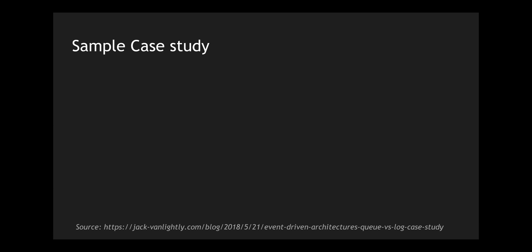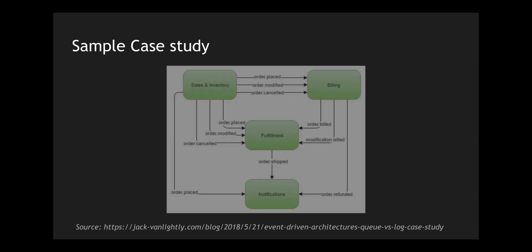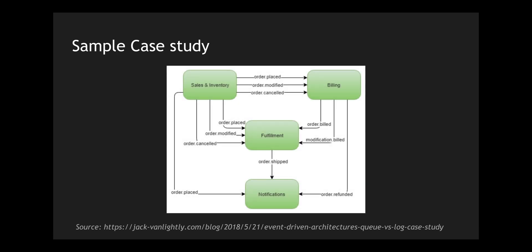Let's understand the RabbitMQ versus Kafka battle with a small case study from Jack Van Lightly, who created a very good analogy using event-driven architectures by comparing queues with logs — queues being RabbitMQ and logs being Kafka. The case study architecture has four microservices: sales inventory, billing, fulfillment, and notifications. These all communicate with each other, with events like order placed, order modified, and order cancelled being sent between services.